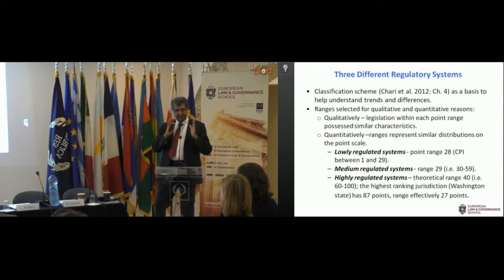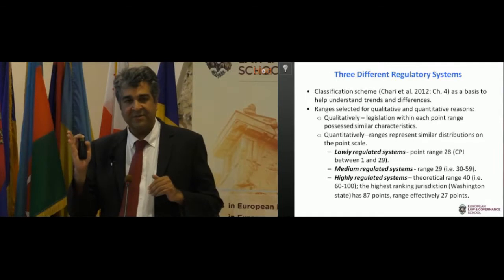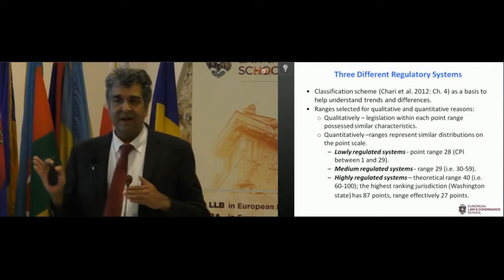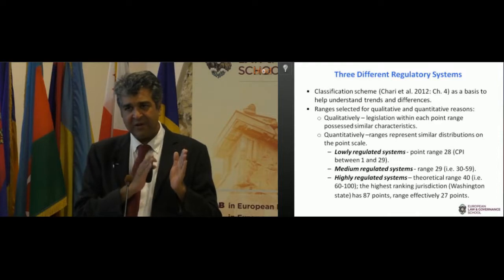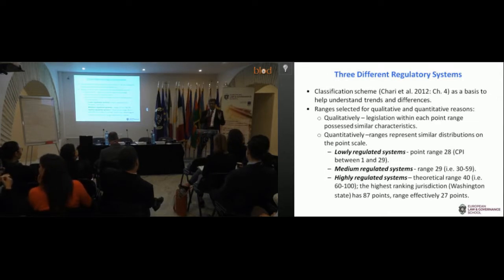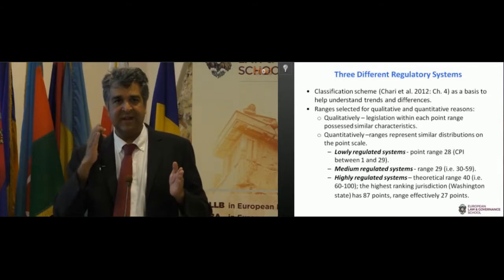Quantitatively, we saw that there were three types or three ranges of quantitative analysis. There were those systems with point scores between 1 and 29, then those between 30 and 59, and then those over 60. Given that our highest observation at the time was Washington State, which had a score of 87, we thought that gave us a roughly similar quantitative range of around 28 to 30 points, where you can see a kind of breakdown from a quantitative point of view.